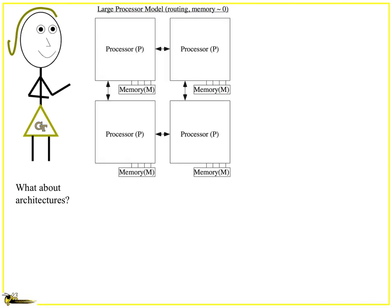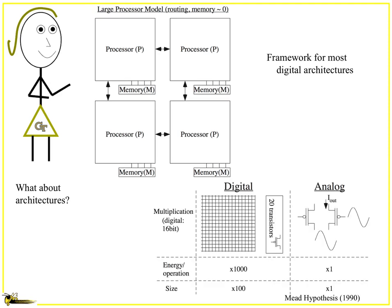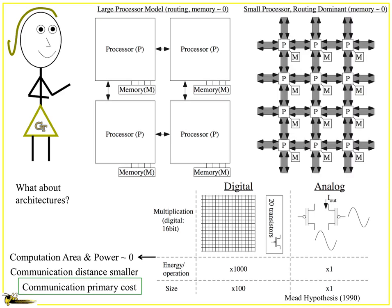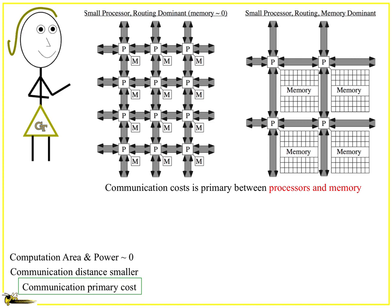What do you do about architectures? Digitally, you classically have large processors with some memory and computing between them, and you really focus everything on the processors. In analog, you have the classical Meade hypothesis, which says the devices doing analog — say, for a multiplication — are a whole lot smaller, and the energy required is a whole lot smaller. So maybe the processor computing is almost nothing, which means your question becomes: how do I get data in and out? You start rethinking this as a small processor case where the routing is dominant.